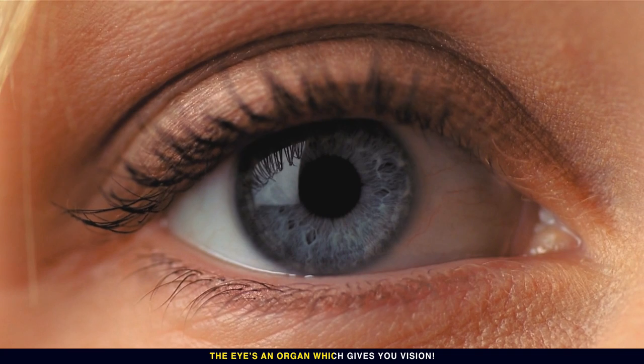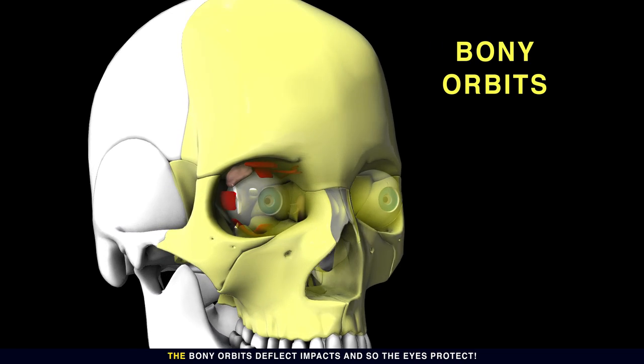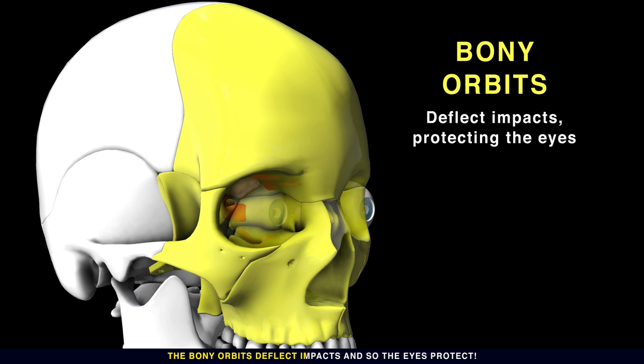The eye's an organ which gives you vision. Photoreceptors detect light with high precision. The bony orbits deflect impacts and protect the eyes.